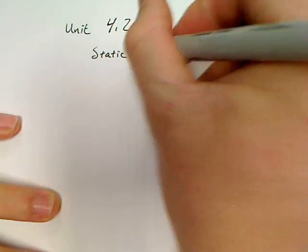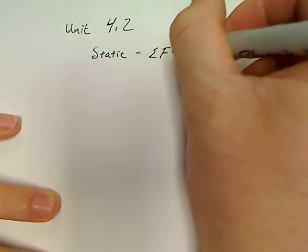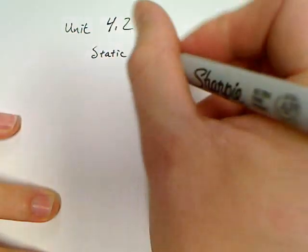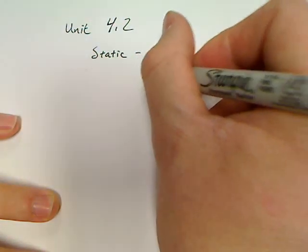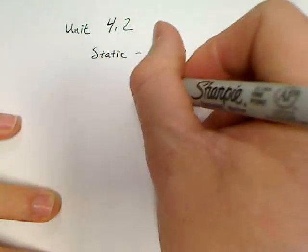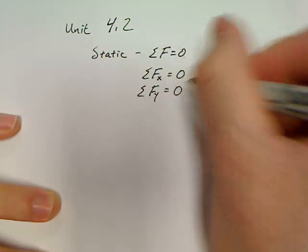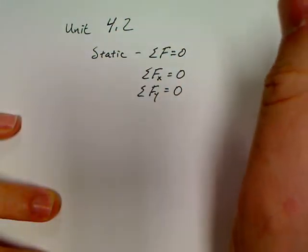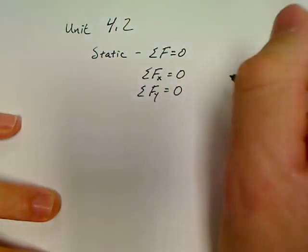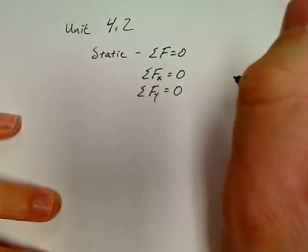What we're going to be looking at today are problems that are static. A problem that's static just means the sum of the forces on there are equal to zero. Matter of fact, we can say that the sum of the forces in the x direction are zero, and the sum of the forces in the y direction are equal to zero. And this is known as the first condition for static equilibrium. This is what we've got right here.